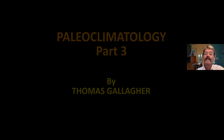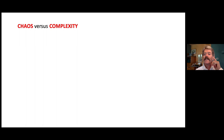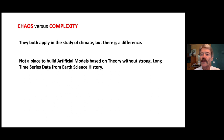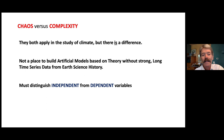In studying climate, two basic concepts need to be considered: complexity and chaos. They both apply in the fields of climate analysis and prediction, but there is a difference between the two of them. This is not a place for artificial models based on theory without extensive study of long time series data from Earth's science history, in order to distinguish between the dependent and the independent variables.